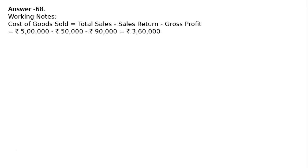Here, total sales is Rs. 5 lakhs, minus sales return is Rs. 50,000, minus gross profit is Rs. 90,000. Rs. 3 lakhs 60,000 is your cost of goods sold.